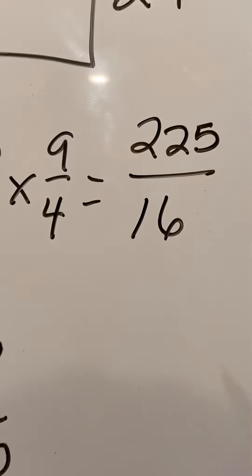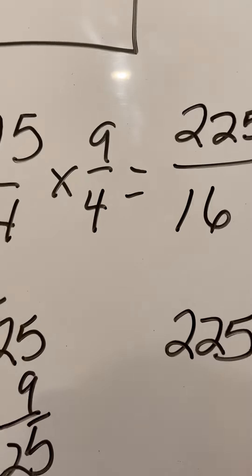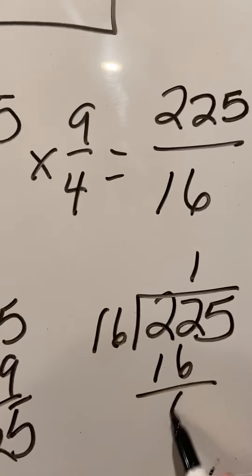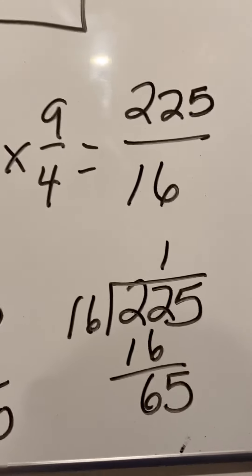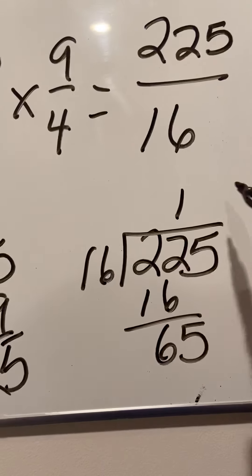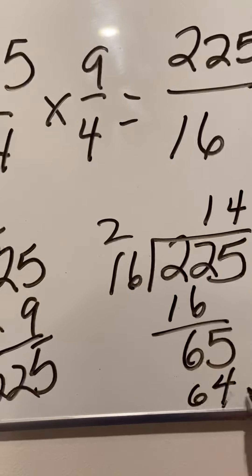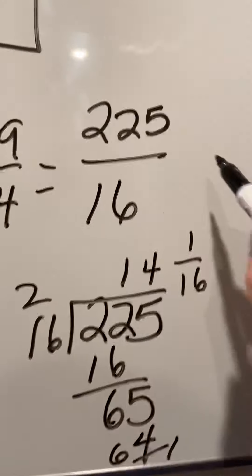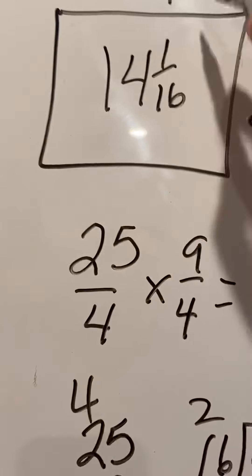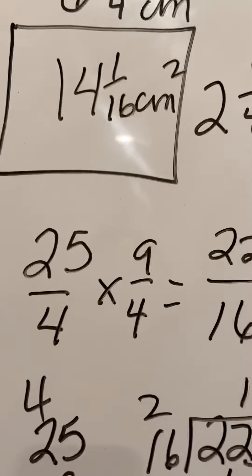And then what is a fraction? I hope everyone's saying it with me. It's a division problem. 225 divided by 16, which goes into it once with 65 left over. 16 goes into 65 four times. That'd be 24 with one left over. So 14 and one sixteenths. So my answer would be 14 and one sixteenths. And this is centimeters. I'm making it up. 14 centimeters squared.